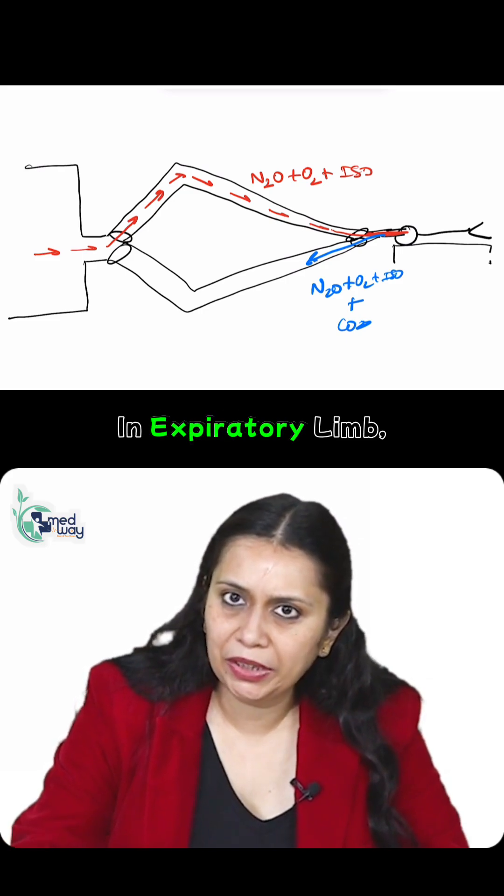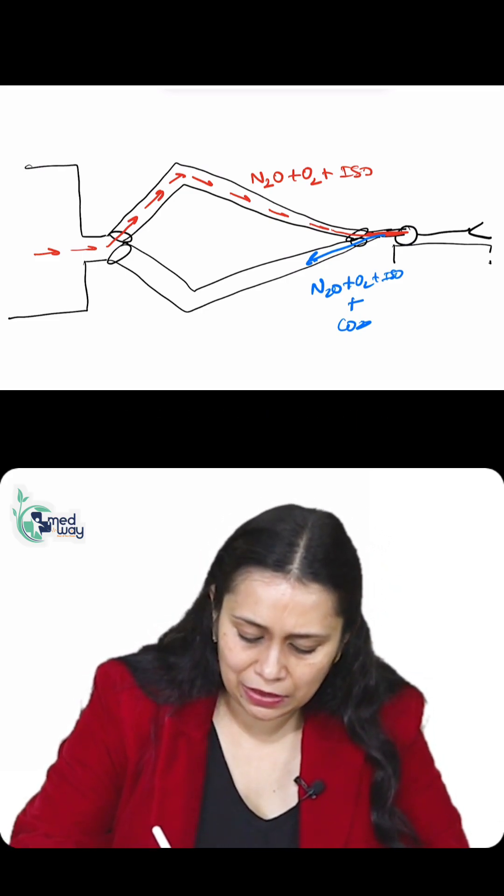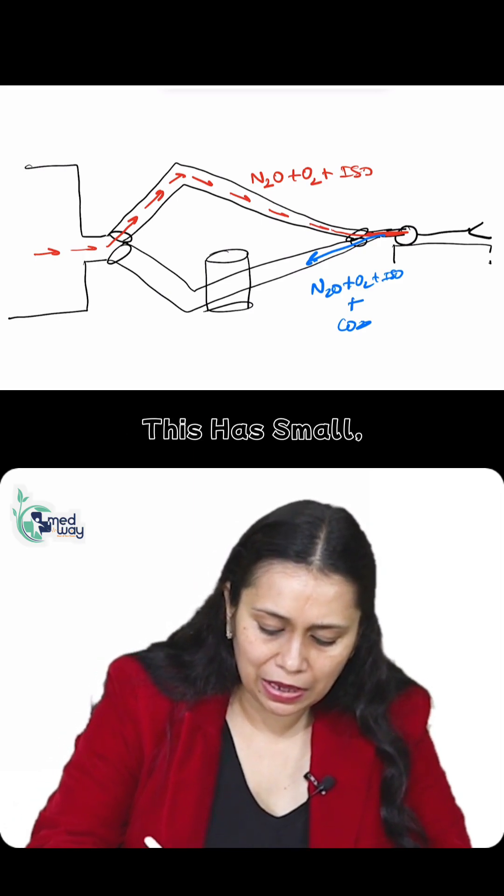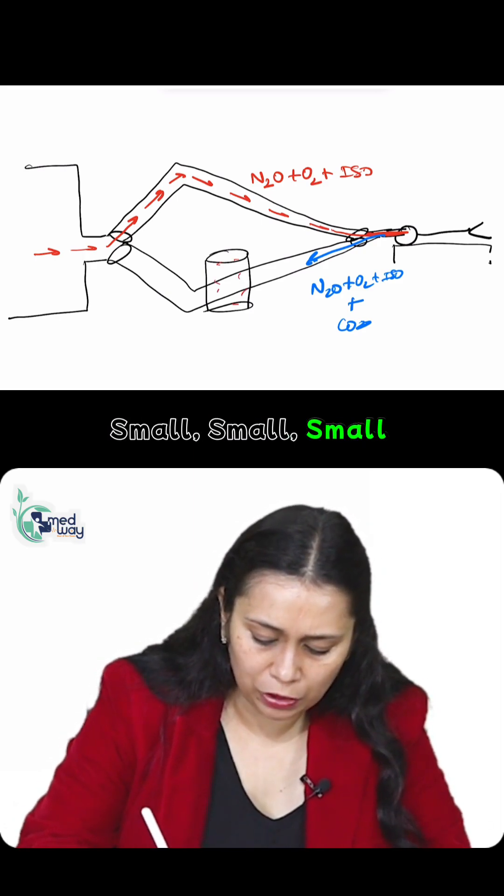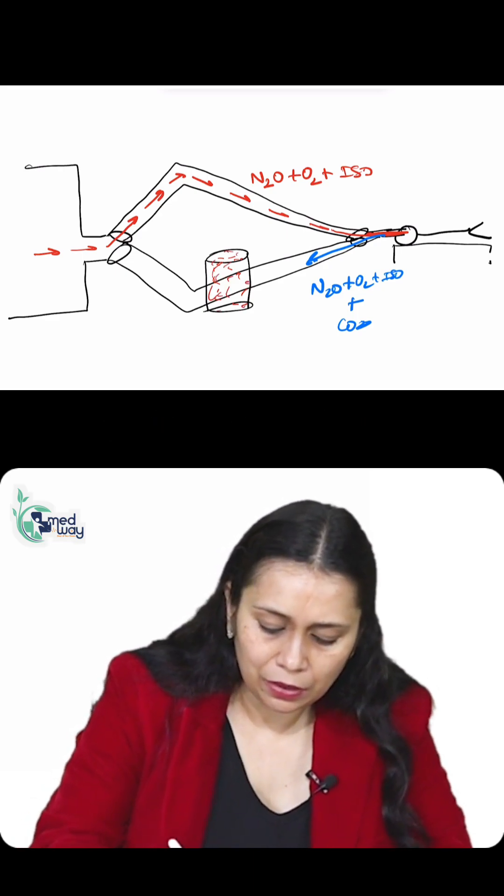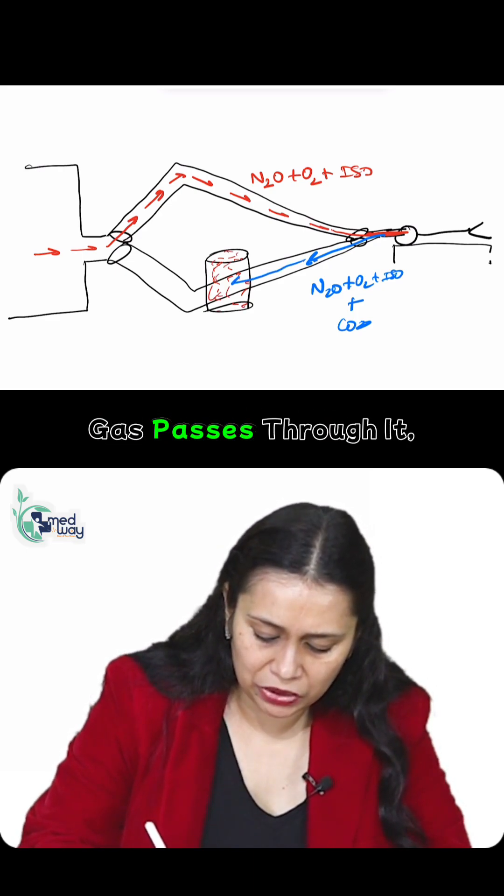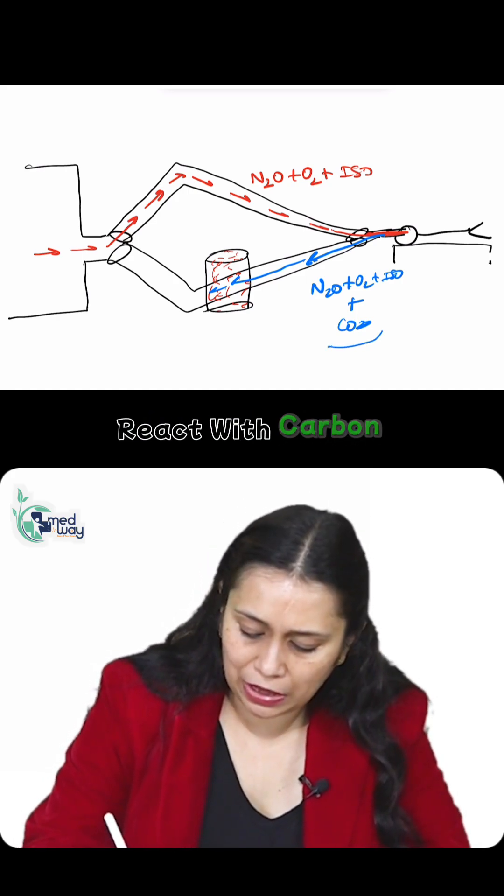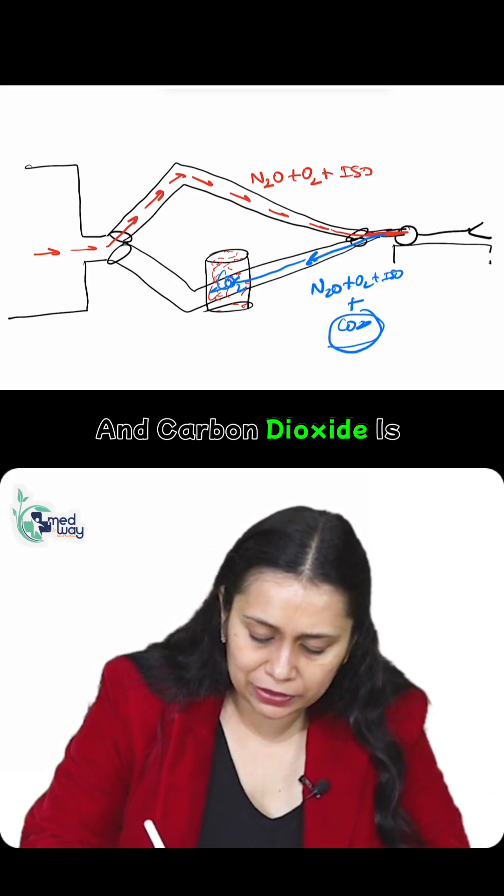In the expiratory limb, a very important new component was added called the carbon dioxide absorber. This has small granules present in it, made up of chemical substance. When the expiratory gas passes through it, the chemical present in these granules reacts with carbon dioxide, and carbon dioxide is absorbed.